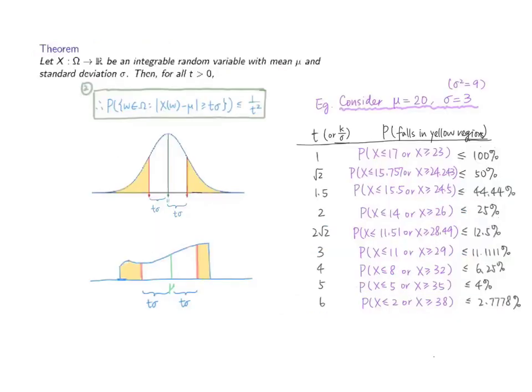Let's refer to the diagram and table here for interpretations of Chebyshev's theorem. Referring to the second inequality, this means that the probability that the value of x is at least t times the standard deviation away from the mean is at most 1 over t squared. It also means that the area of the two tails — which is at least t times the standard deviation away from the mean mu — is occupying at most 1 over t squared of the total area under the graph.